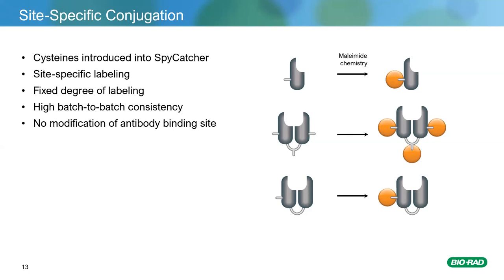This means the degree of labeling between all clones in a project is identical — any differences a customer sees when evaluating clones will reflect antibody binding characteristics, not labeling variation, which can occur with primary amine coupling to independently label antibodies. Additionally, because labeling is done before the FAB regions are added, customers can be confident no label is incorporated into the binding sites of the antibodies, which could otherwise abolish binding.